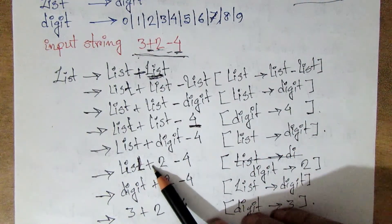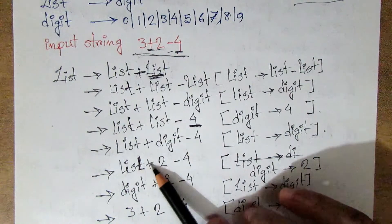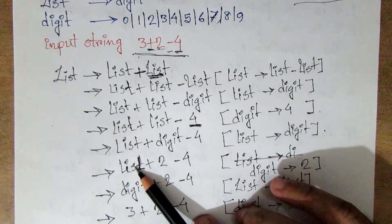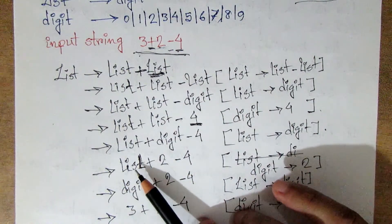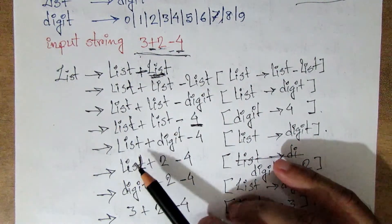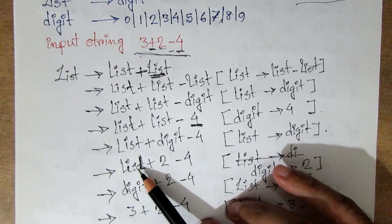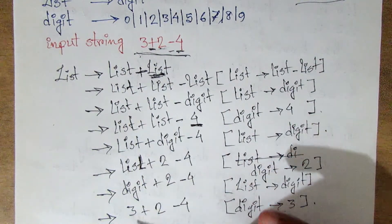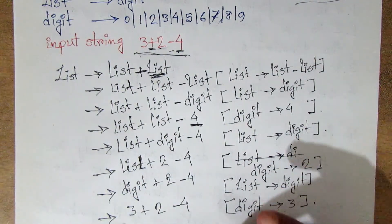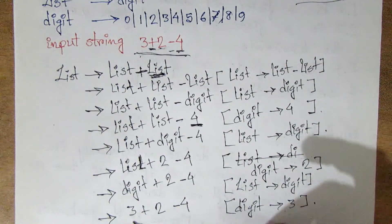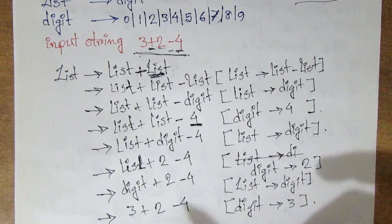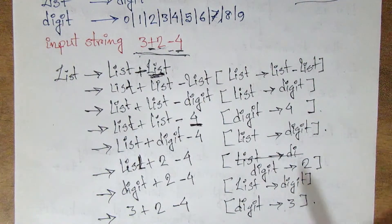Now we have a terminal entry. So we have to start from the same point. So we have a left list on the left. So now we have a non-terminal list. In the terminal graph we have an existing square. From existing to 3 plus 2 minus 4. Now we have arrived at the rightmost derivation completely.